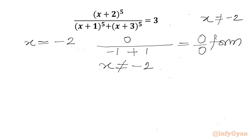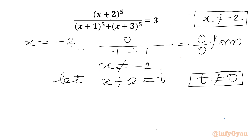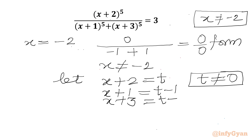Now I will use substitution. Let x+2 = t. Since x cannot be -2, our substitution gives t cannot be 0. We can express x+1 = t-1 and x+3 = t+1.